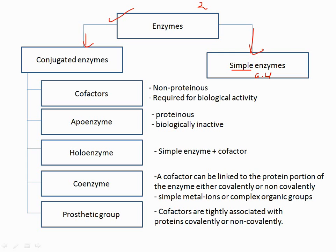In conjugate enzymes, cofactors are made up of the non-proteinous part of the enzyme that is required for biological activity. If you remove the non-proteinous part, the remaining main part is the protein part of the enzyme, which is called the apoenzyme, and it is biologically inactive — it is not responsible for the activity.